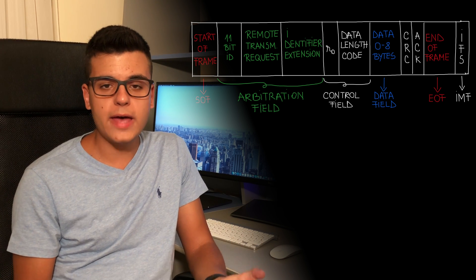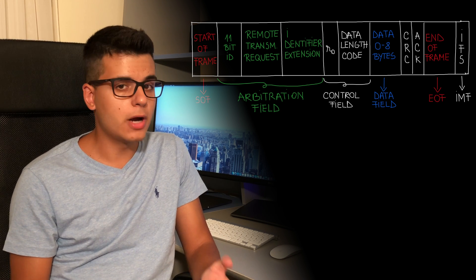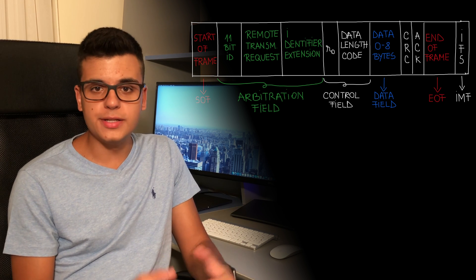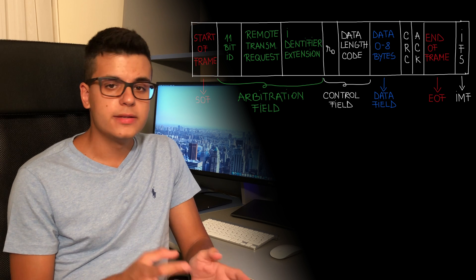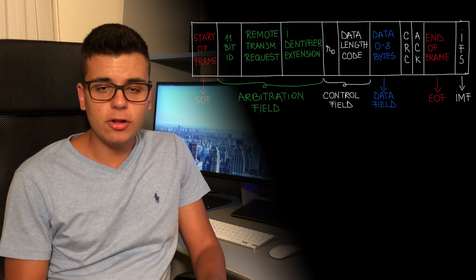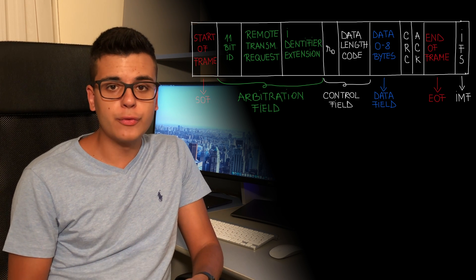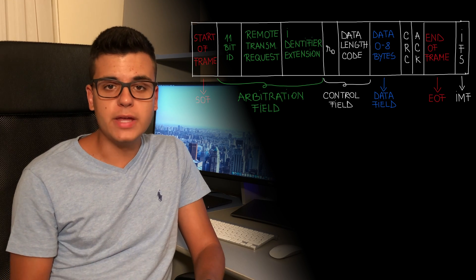The data field is straightforward — it contains 0 to 8 bytes of data depending on what was specified in the data length code. The CRC or cyclic redundancy check is a very reliable way to detect errors and is much more fail-proof than a simple checksum. The acknowledge bit is a recessive bit that allows receiving nodes to confirm they received an error-free message. Receiving nodes verify the CRC and check for errors; if none are found, they overwrite this recessive bit with a dominant bit. If an error is detected, the recessive bit is not overwritten and the transmitter knows it has to send the message again.